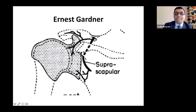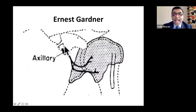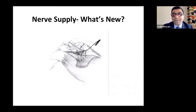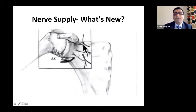The suprascapular nerve comes through the suprascapular notch, supplies the supraspinous fossa, with branches to the joint. It then passes through the spinal glenoid notch, supplies the infraspinous muscle, and the inferior part of the capsule posteriorly. The axillary nerve comes from the quadrangular space and supplies the capsule both posteriorly and anteriorly. The lateral pectoral nerve has been found in many cadaver specimens to persistently supply the anterior joint capsule as well as the acromioclavicular joint. The lower subscapular nerve also supplies the anterior joint capsule.